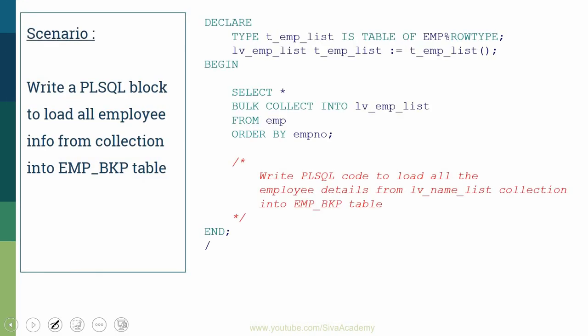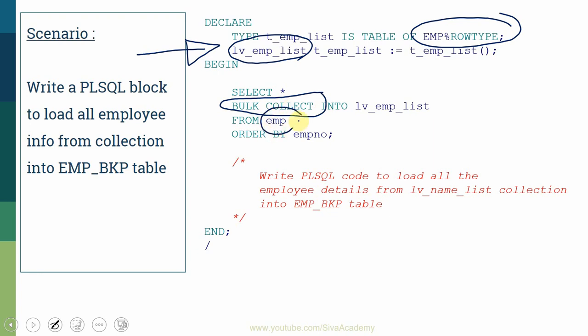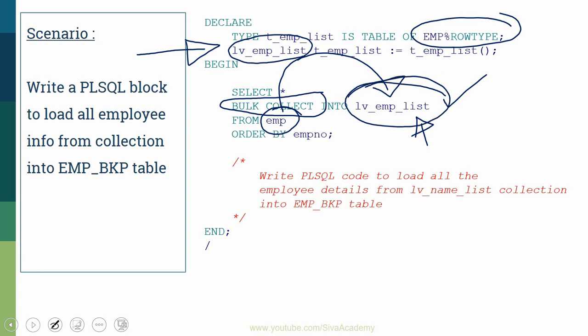Let us start with a simple example. I have declared one nested table variable called nv_employee_list of type employee%ROWTYPE, which means it can hold multiple records from the employee table. Using the BULK COLLECT keyword, I am transferring all the information from the employee table into this collection variable. After some manipulation, we want to insert all the information from this collection into another table called emp_backup.